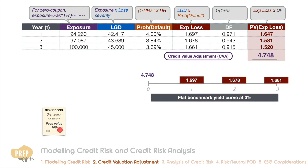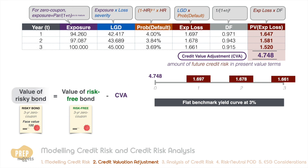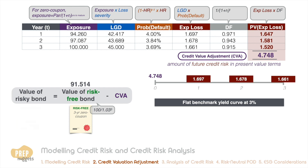The credit value adjustment is the amount of future credit risk expressed in present value terms. It can also be seen as a price adjustment over that of an equivalent risk-free bond — subtracting it from the risk-free bond value gives the value of the risky bond. Based on a three percent risk-free rate, the price of a three-year risk-free zero coupon bond is 91.514. For a three-year risky bond with a hazard rate of four percent and a loss recovery of 55 percent, the CVA is 4.748, giving a risky bond value of 86.767.